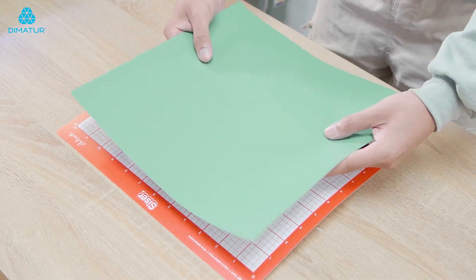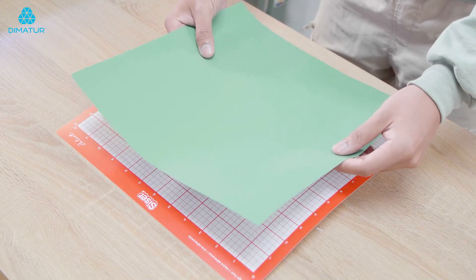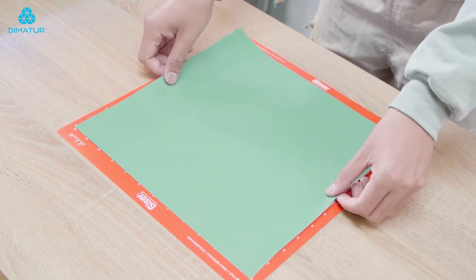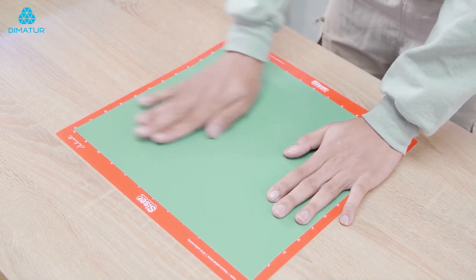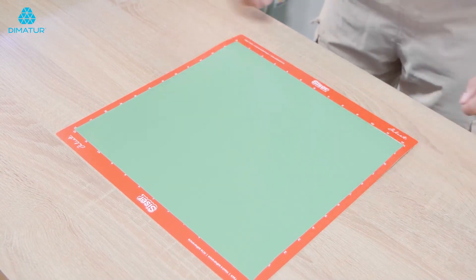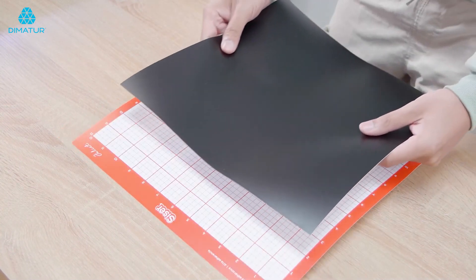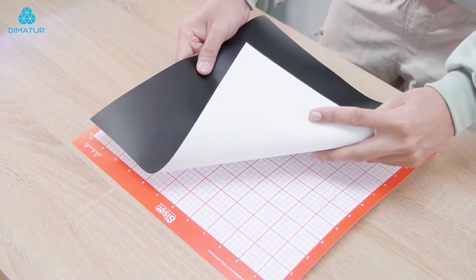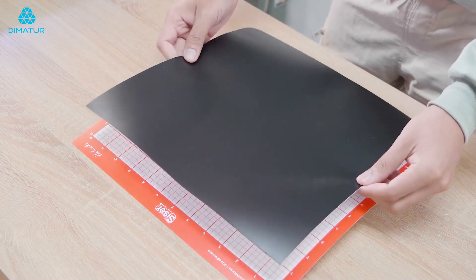For HTV projects when using a mat, place your HTV carrier side down or shiny side down on the cutting mat, and don't forget to mirror. For PSV, make sure to have the material facing up when applying it to the mat.